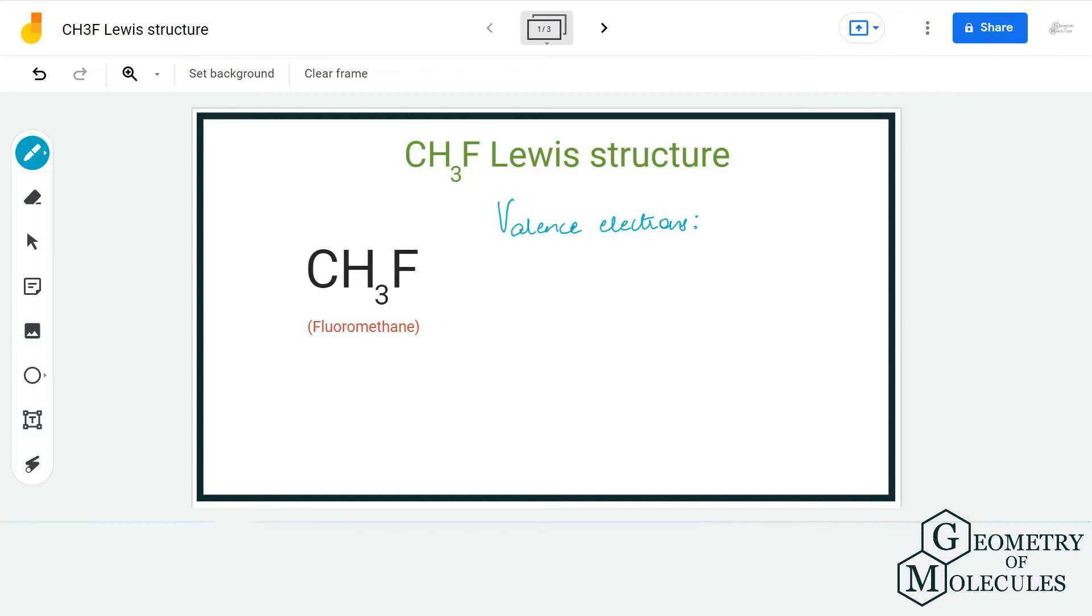Hi guys, welcome back to our channel. In today's video, we are going to help you determine the Lewis structure for CH3F molecule. It's the chemical formula for fluoromethane, and to find out this Lewis structure, we are first going to look at the total number of valence electrons for this molecule.